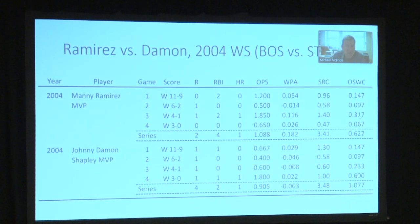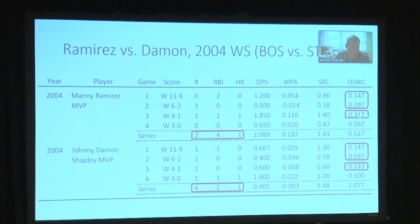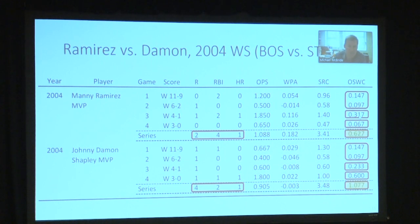Let's look at 2004. Manny Ramirez, an outfielder, compared with Johnny Damon, an outfielder. They have nearly identical SRC, but Johnny Damon has much higher win credit. In that series, Boston beat St. Louis in a four-game sweep. By traditional metrics they look identical — both hit one home run. In the first two games they received identical Shapley win credits. In game three, Manny Ramirez received more — he hit a home run and had an RBI scoring hit. In game four, Johnny Damon hit a home run at the start of the game, and as a shutout that was almost enough to seal the victory, so he received a lot of win credits.